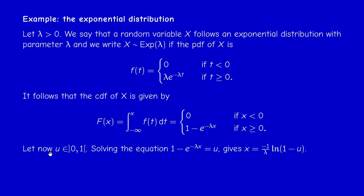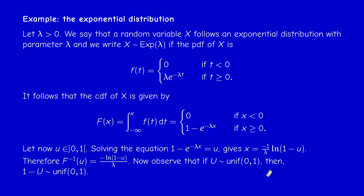Now we solve the equation F(x) = u. Capital F is strictly increasing on (0, ∞), so we solve on that interval. This is easily solved: e^(−λx) = 1 − u, so taking the logarithm gives us F⁻¹. Also, if U is uniformly distributed on (0,1), then 1 − U is also uniformly distributed on (0,1), so we can simplify by one step.